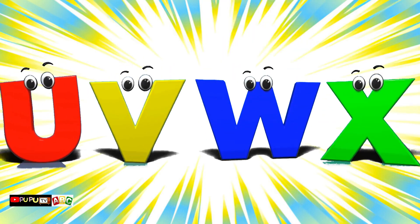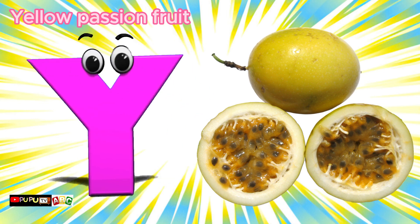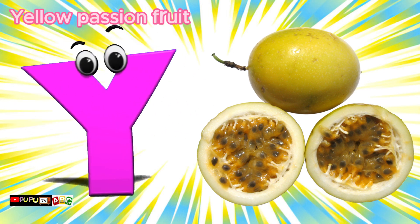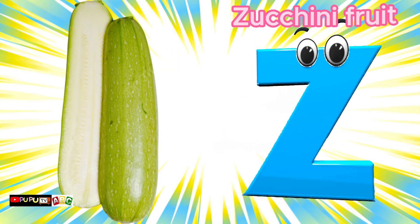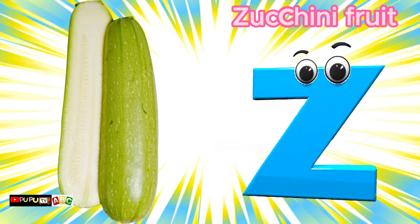Y is for Yellow Passion Fruit, Y-Y-Y-Y Yellow Passion Fruit. Z is for Zucchini Fruit, Z-Z-Z-Zucchini Fruit.